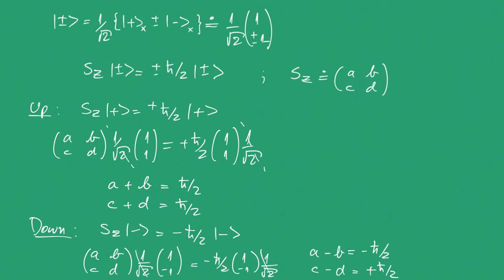Now, if we look at these two equations, we can find 2A equals 0, which means A must be 0. 2B equals h-bar, which means B equals h-bar over 2.